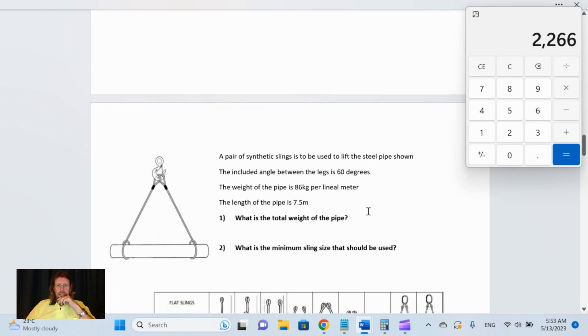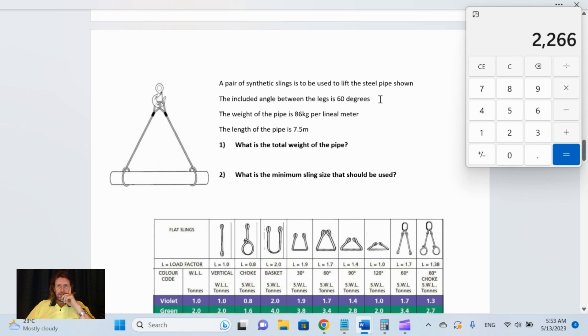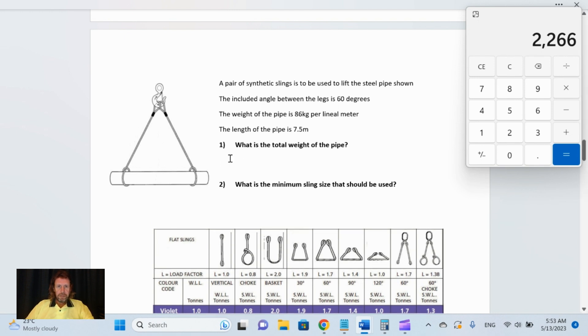Moving down to the next one: a pair of synthetic slings is used to lift the steel beam or steel pipe. The included angle is 60 degrees. The weight of the pipe is 86 kilograms per lineal meter, length of pipe is 7.5. What is the total weight of the pipe? Total weight: 86 multiplied by 7.5 equals 645 kilos.